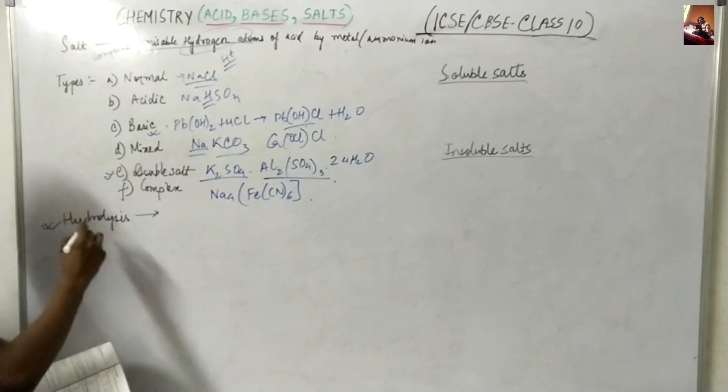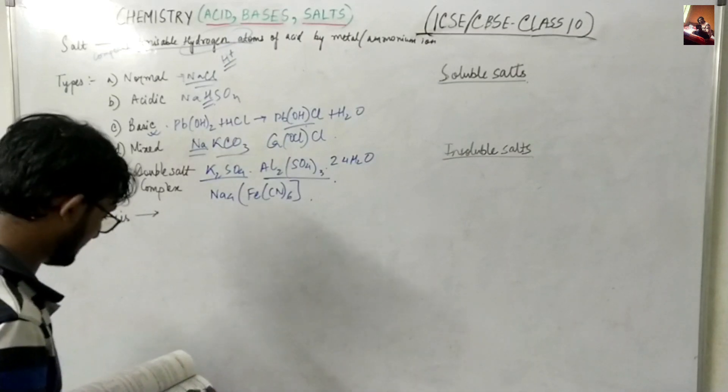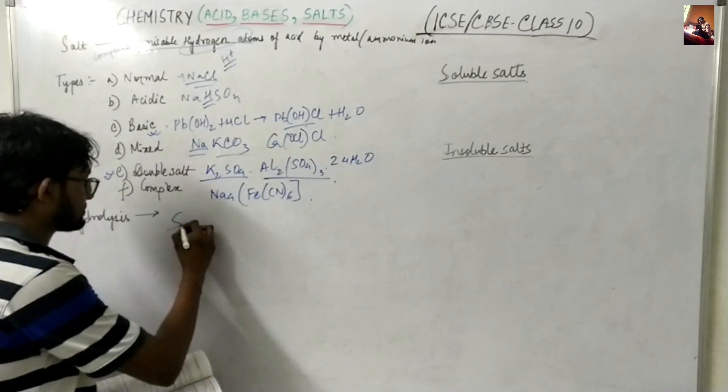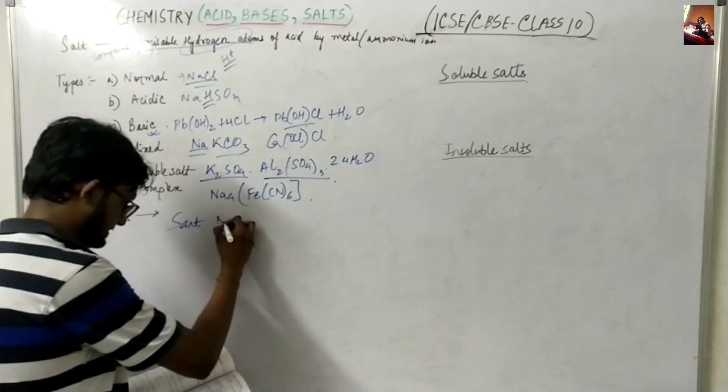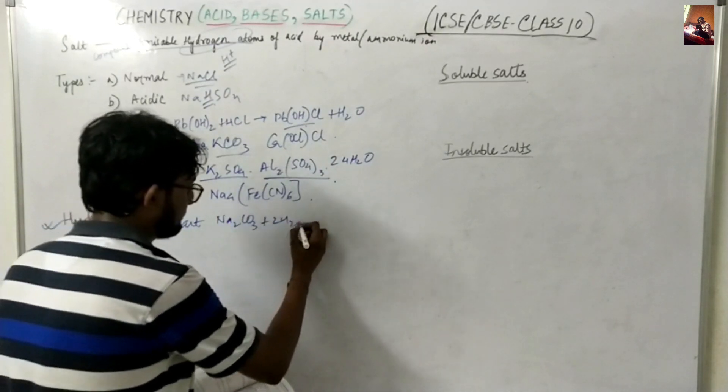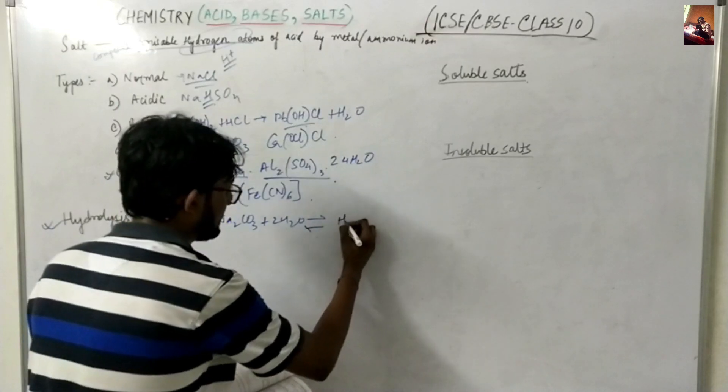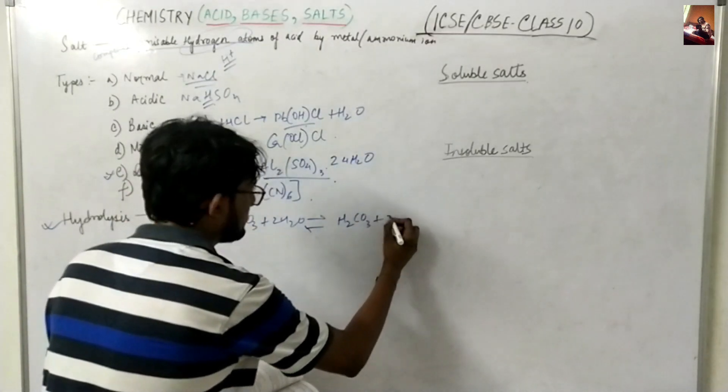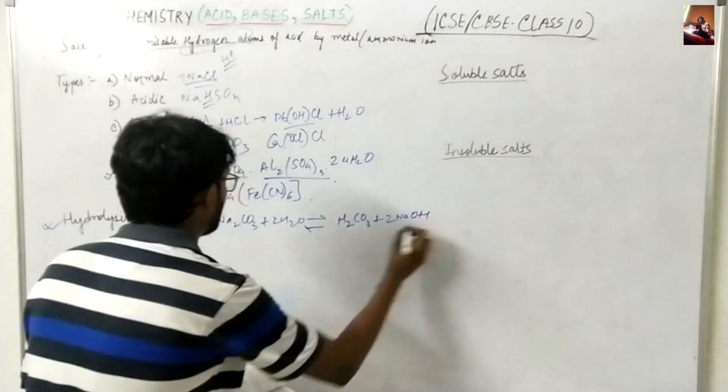So one important part, I have written it over here like hydrolysis. When salt is applied to like water, what will happen? So if I write a salt over here, I will take an example of Na2CO3 plus water. It will produce you, it will give you H2CO3 and 2NaOH. So this is an example of hydrolysis.